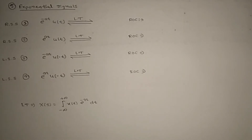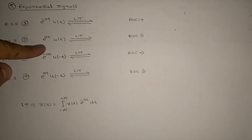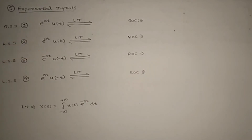Let us see the 5th standard signal: exponential signals. In this, 4 signals are there. That is e^(-at)u(t), e^(at)u(t), e^(-at)u(-t), and the 4th one is e^(at)u(-t).